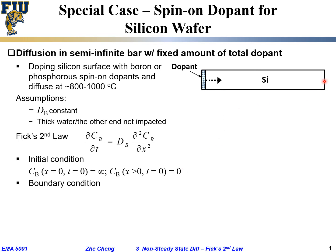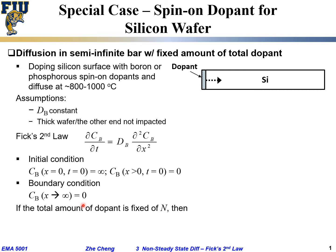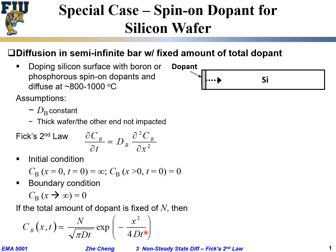The boundary condition is that as x goes to positive infinity, the local concentration stays at zero. Without going into the detailed derivation — which you have learned in differential equations — the solution is: C(x,t) = N / √(πDt) · exp(−x² / 4Dt), where N is the initial total amount of dopant placed on the surface (the spin-on dopant), D is the diffusion coefficient, and t is time.